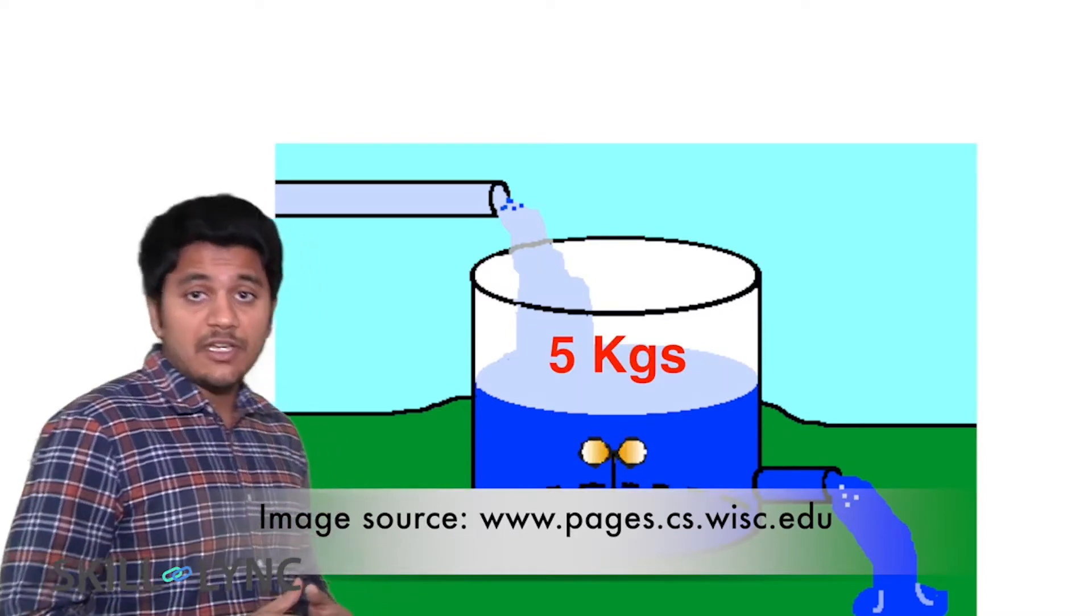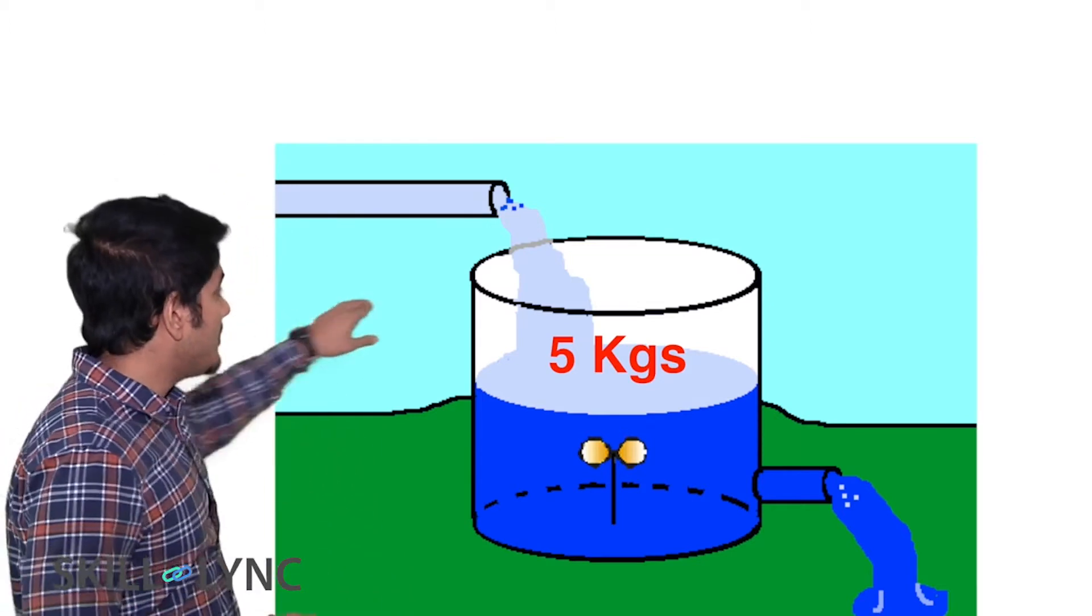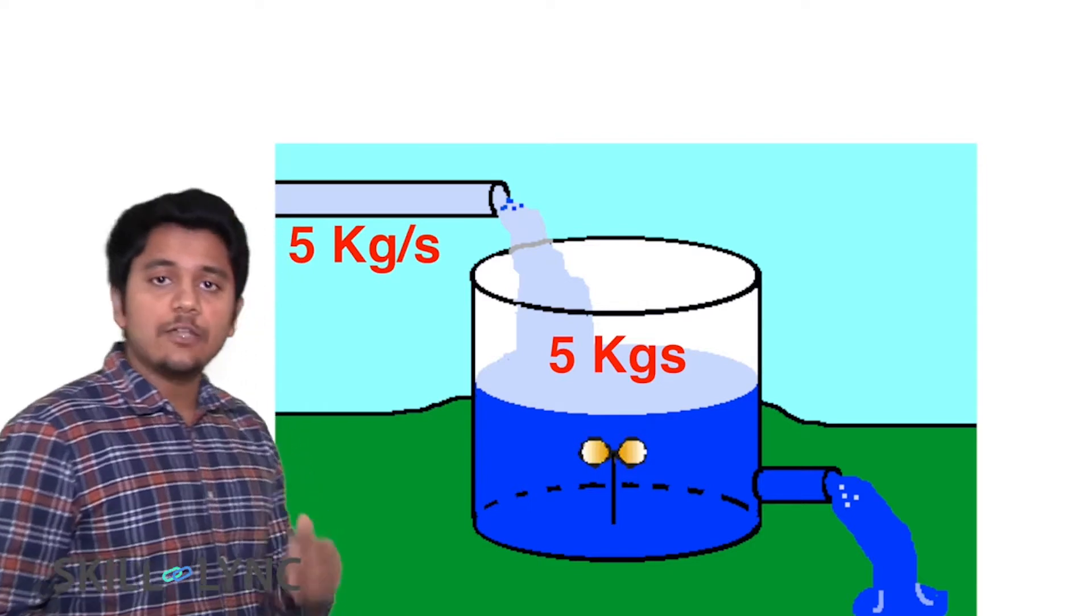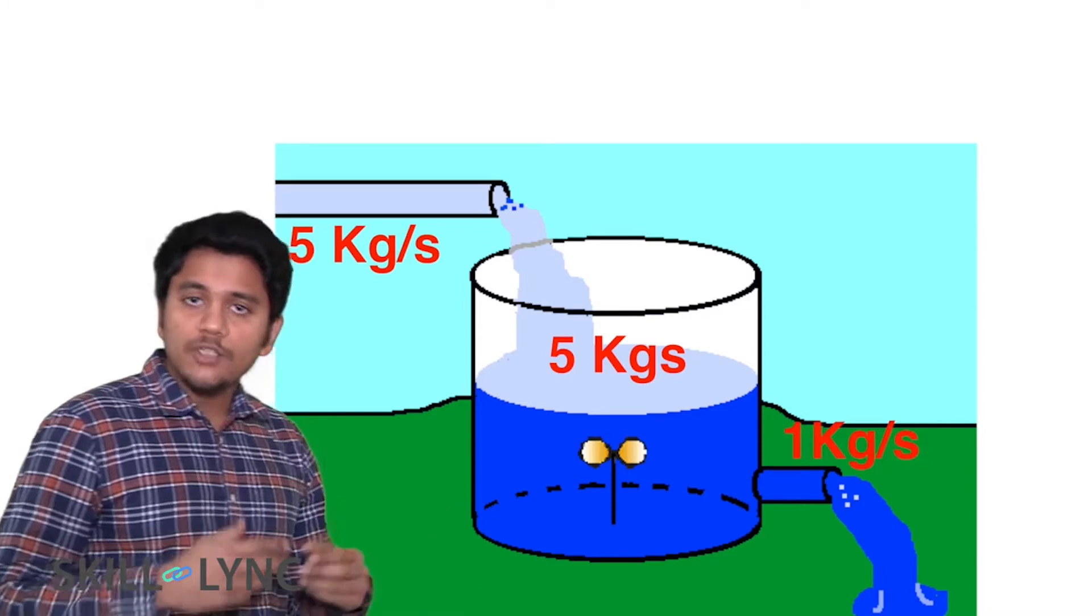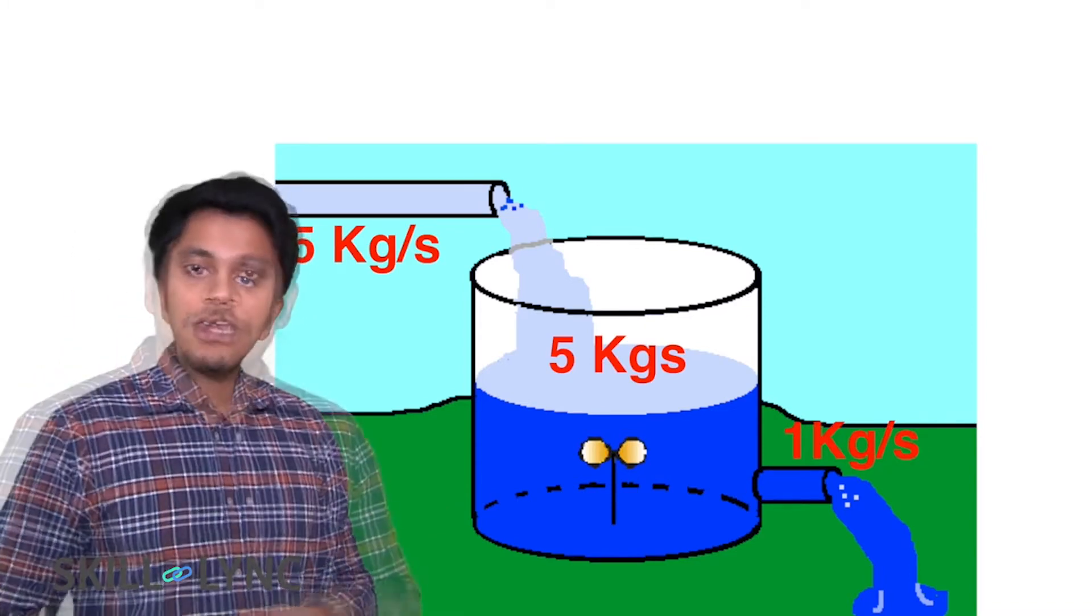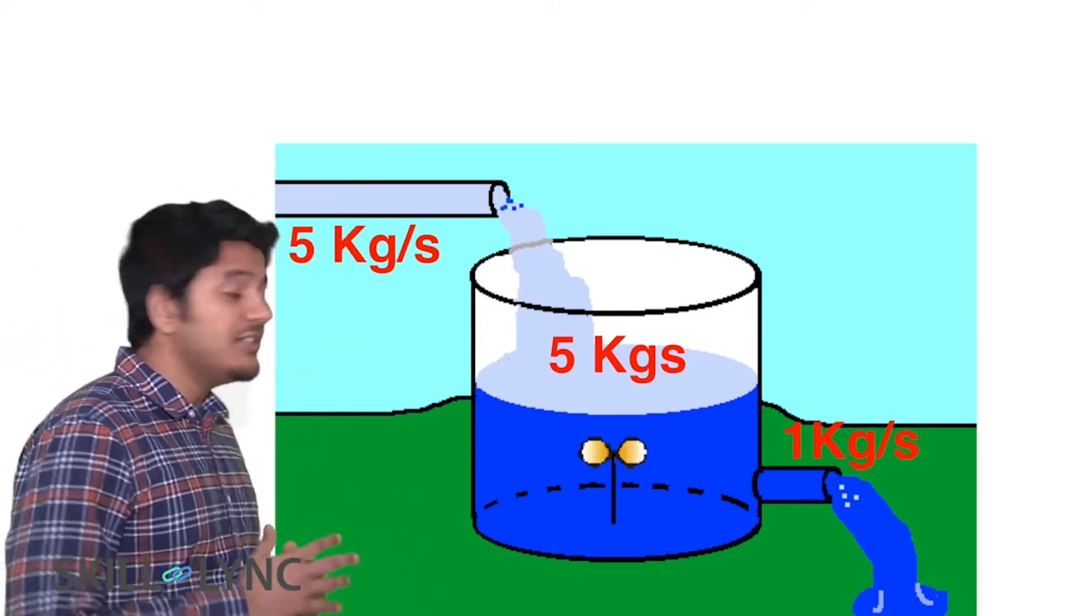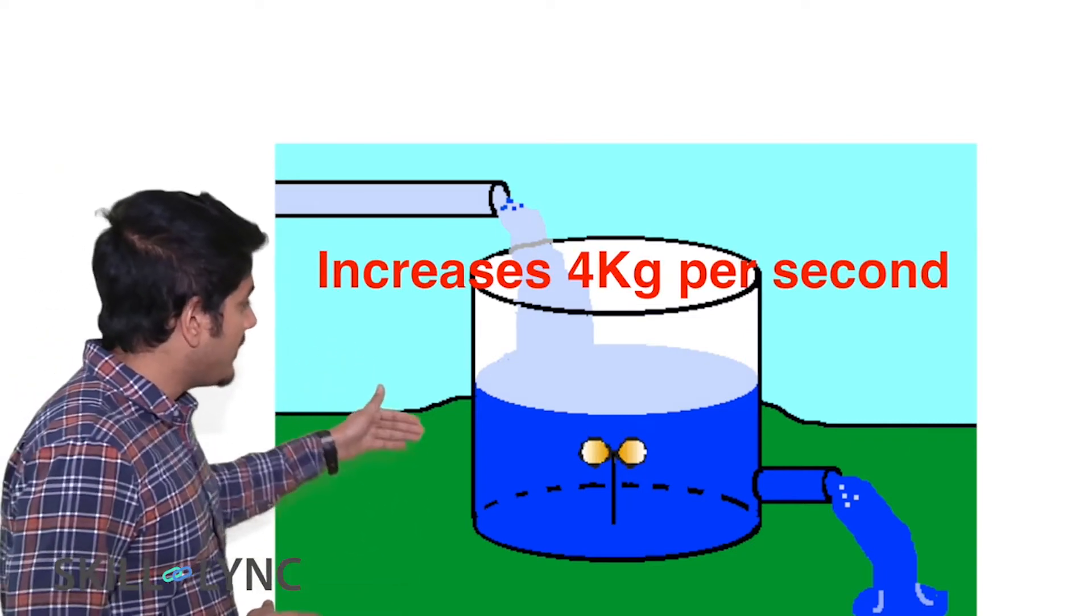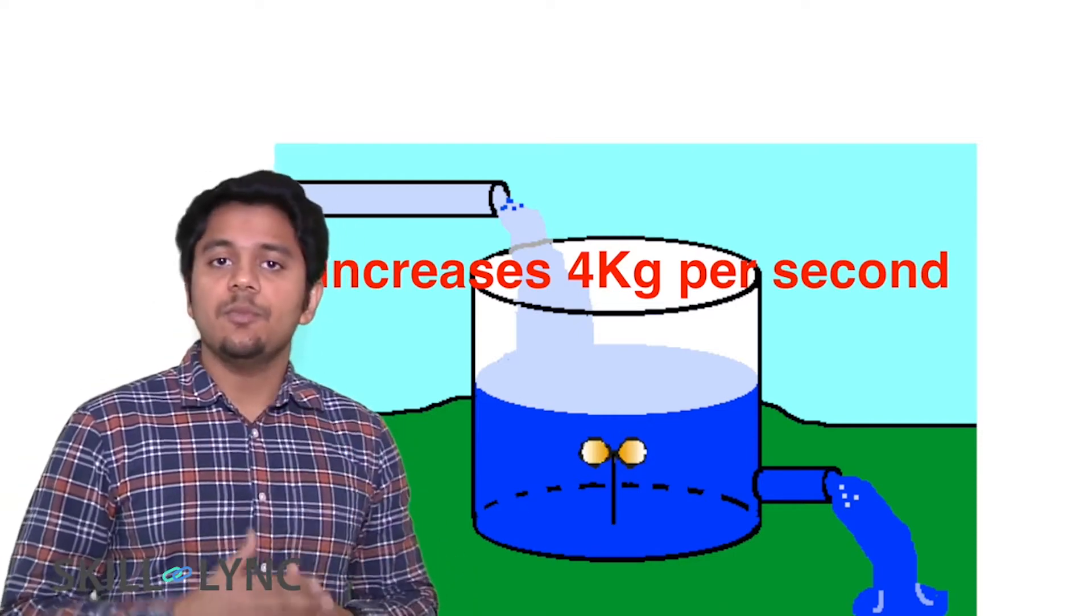Let us assume that initially there is five kilograms of water in this tank. Now here's a pipe that feeds water into this tank at the rate of five kilograms per second, and let us assume that there is a hole in this tank and the water is leaking through this hole at one kg per second. Now if you ask the question what happens to the mass in this tank, the answer is very simple. The mass of water in this tank is going to go up at the rate of four kg per second.